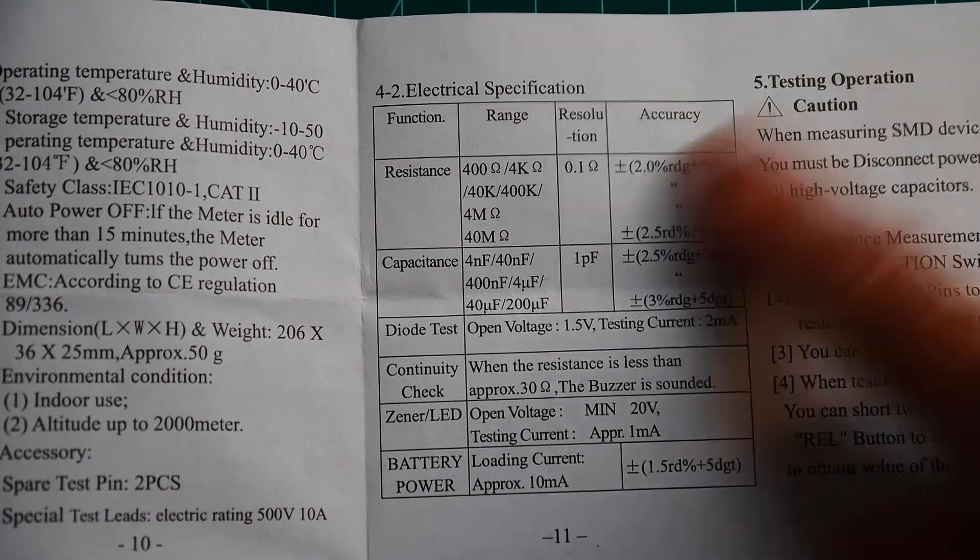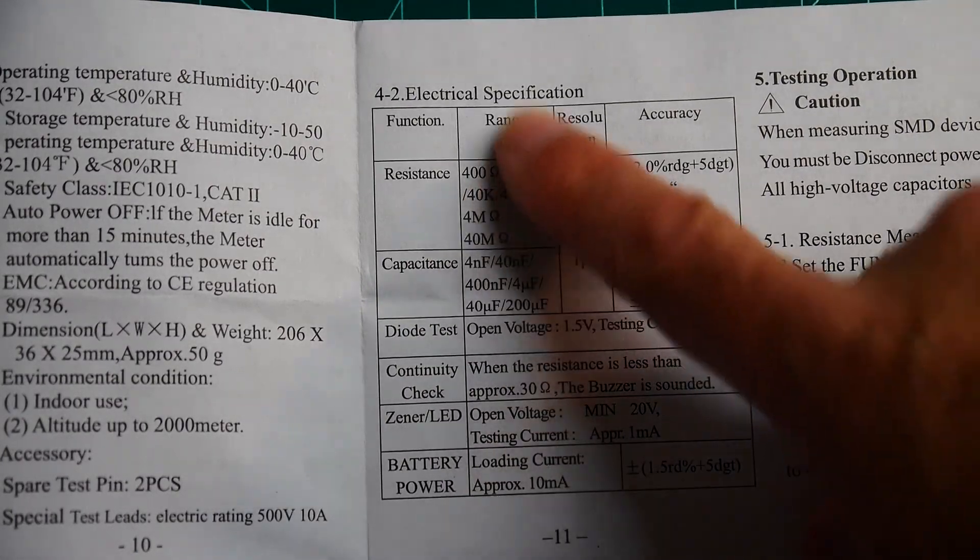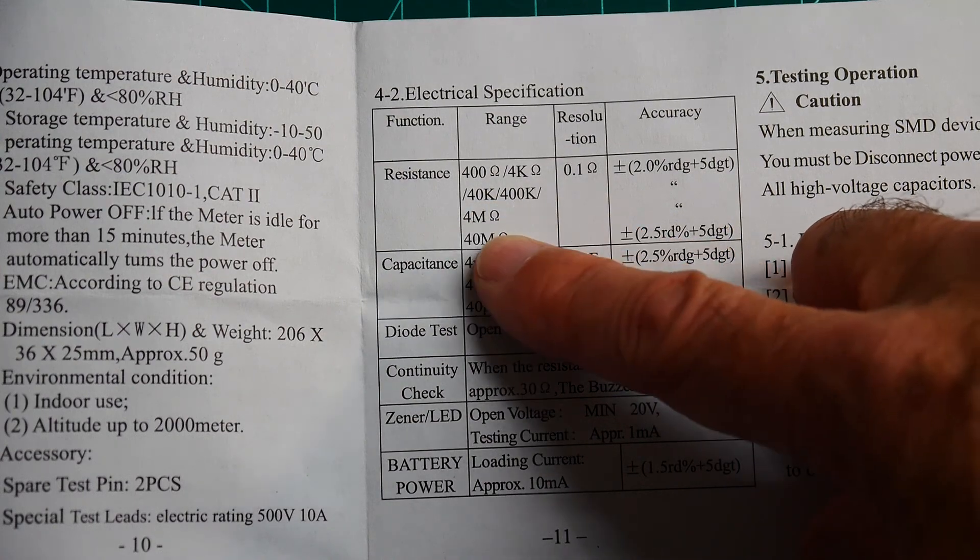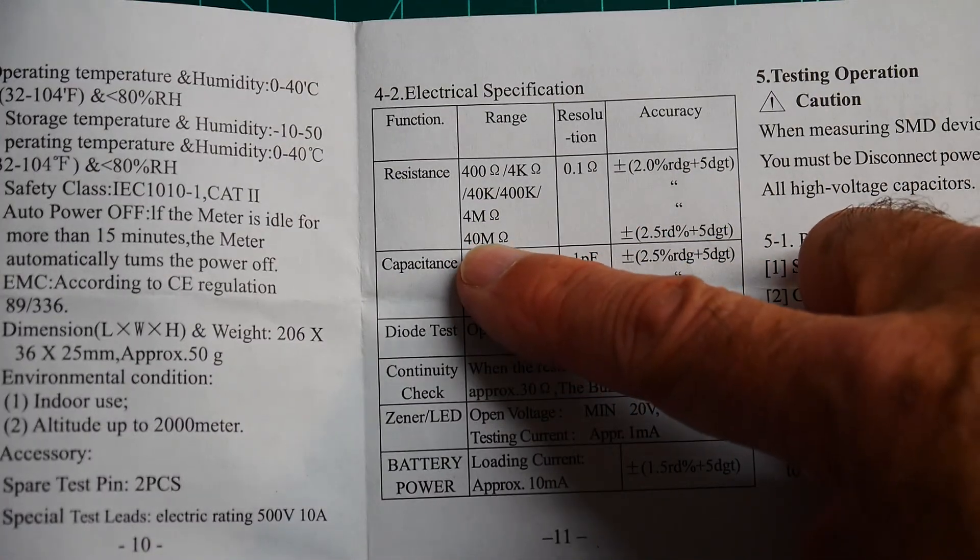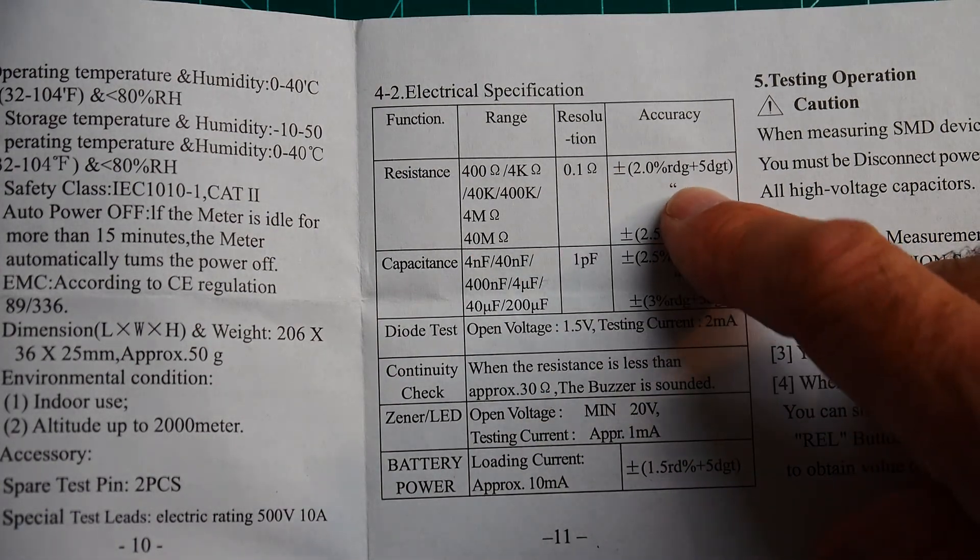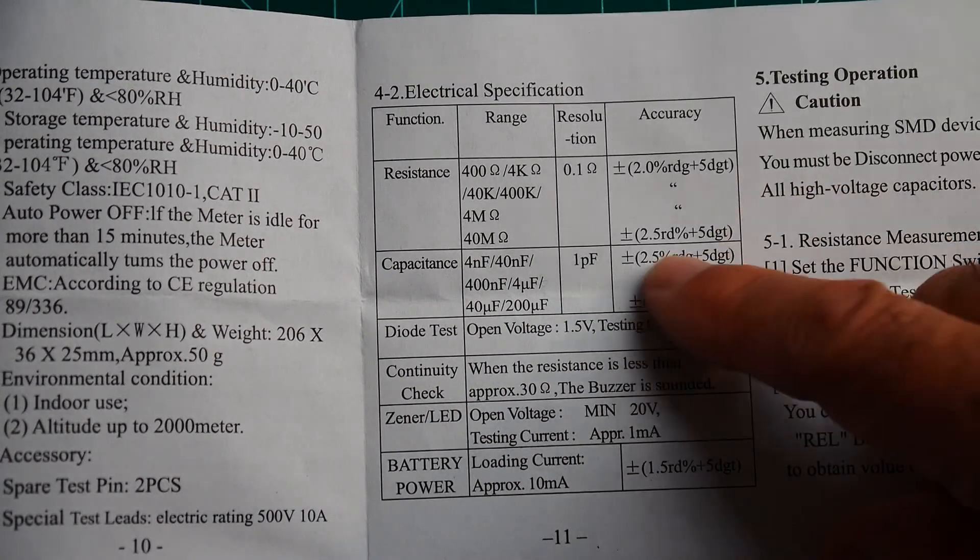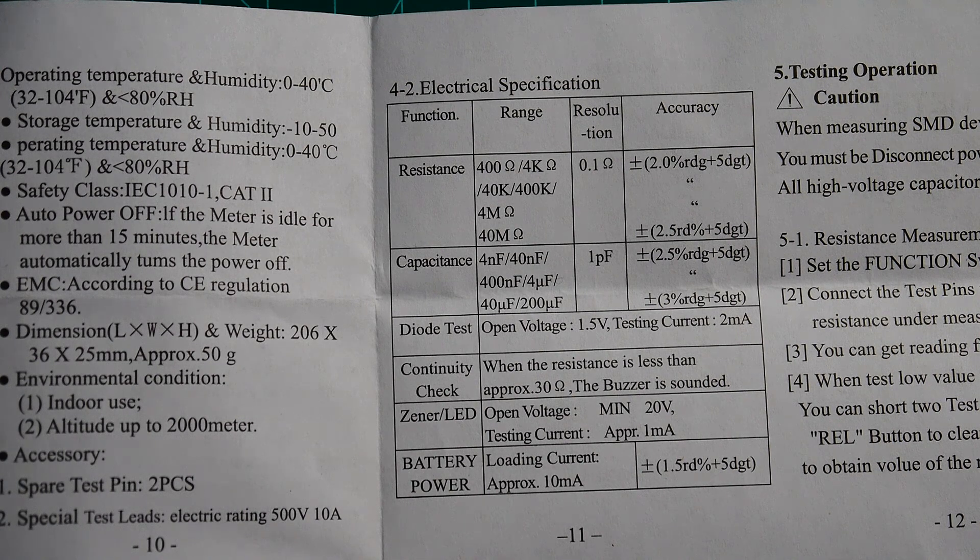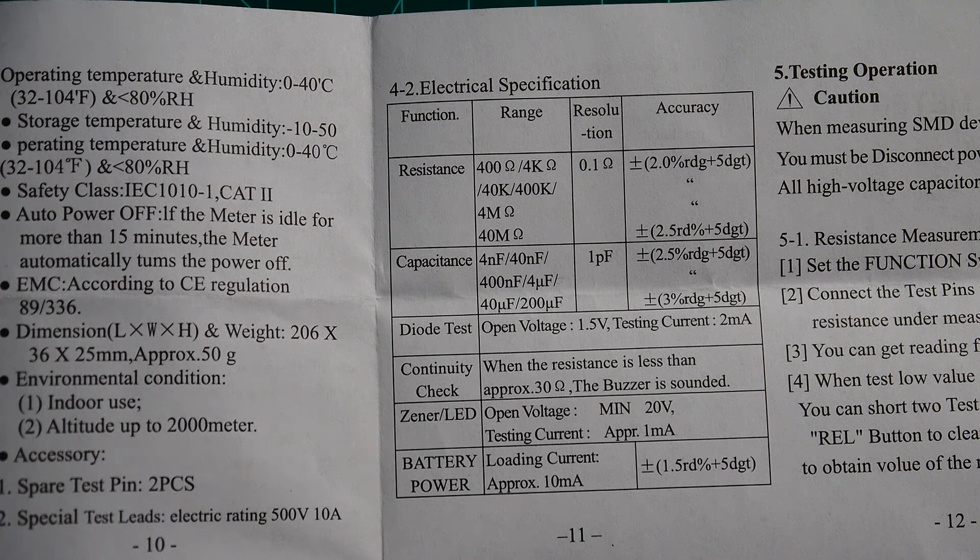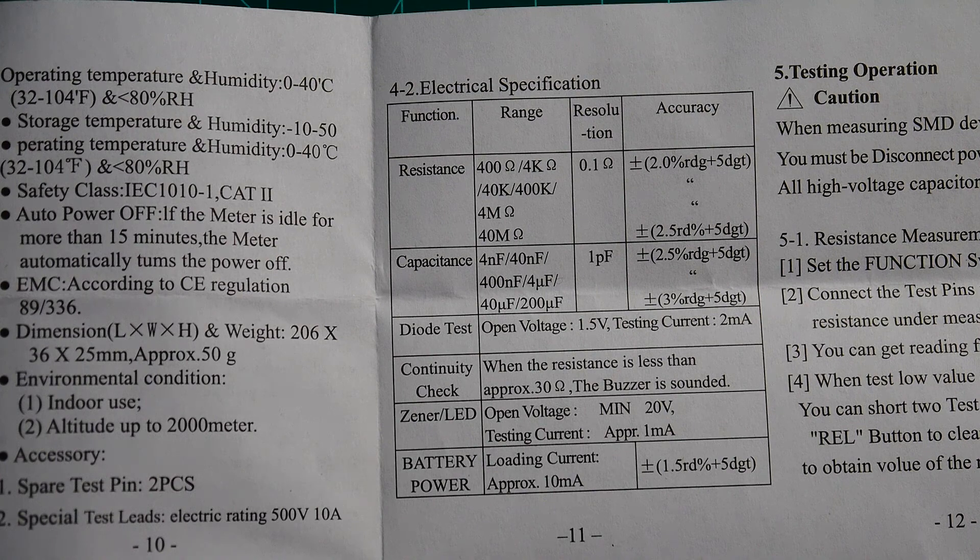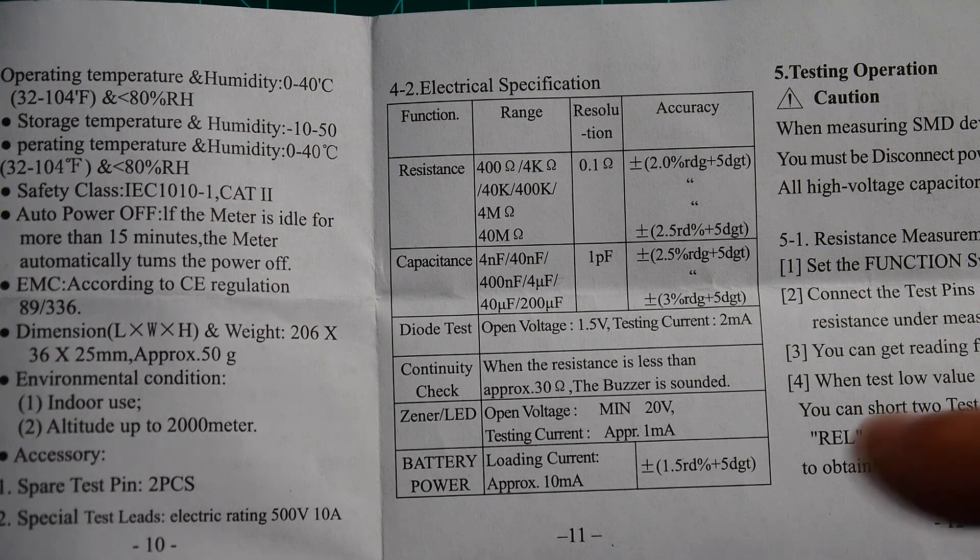But usually diode checkers can't get them because the diode checkers only go up to 0.2 volts. And actually we'll measure coin cell batteries as well. So you can measure batteries here. Resistance, it'll do different ranges: 400 ohms, 4K, 40K, 400K, 4 megs, and 40 megs. Wow.